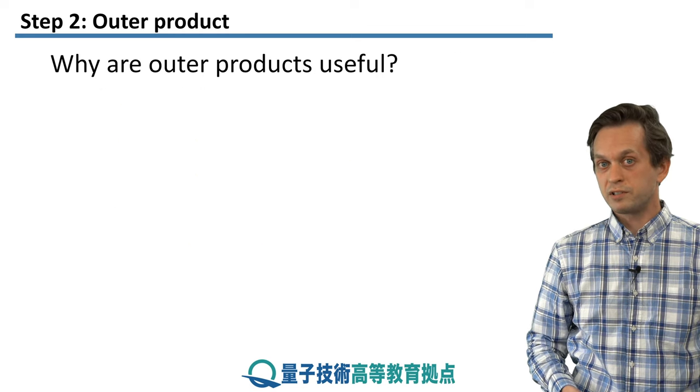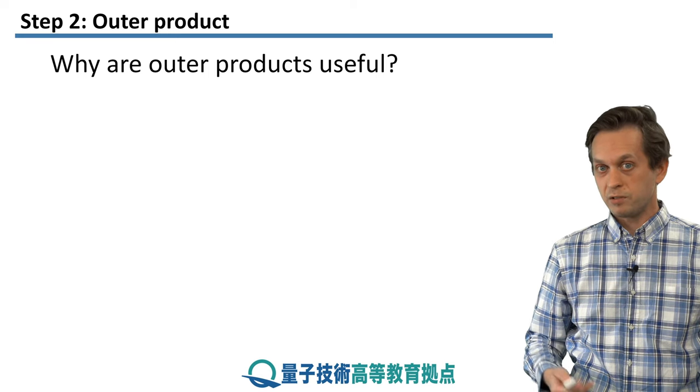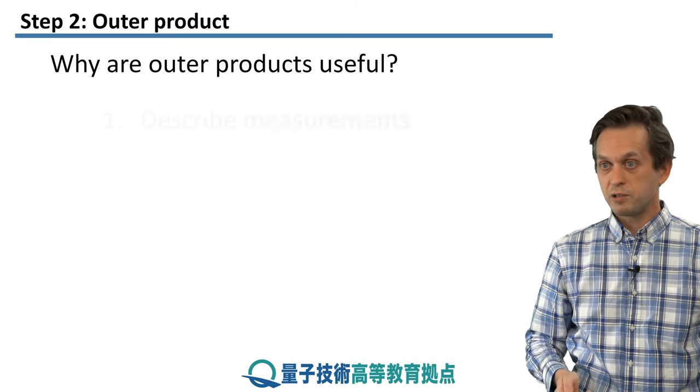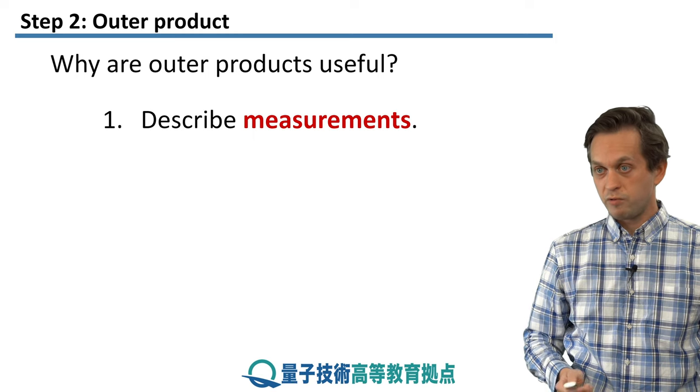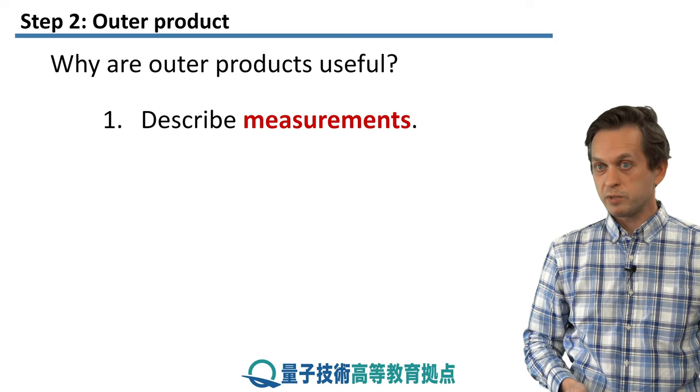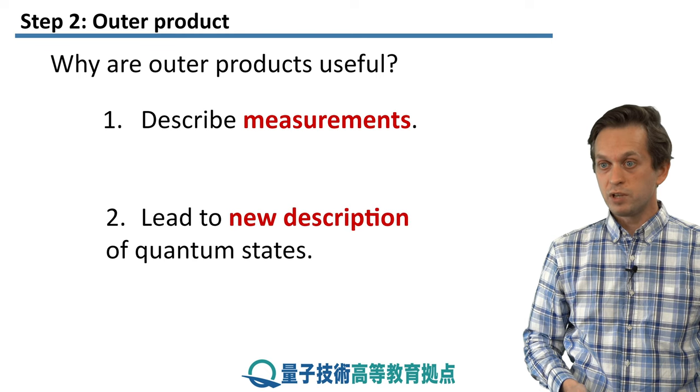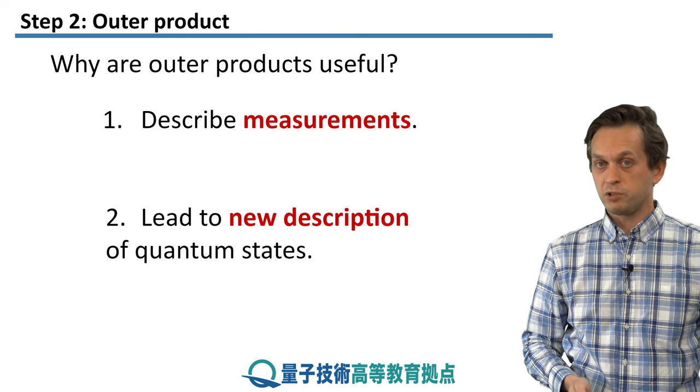But why are we doing this? Is it just a mathematical manipulation or is there some reason behind this? So the outer products turn out to be very, very useful for two reasons. Reason one, they can describe measurements. And reason two, they lead to a new description of quantum states.